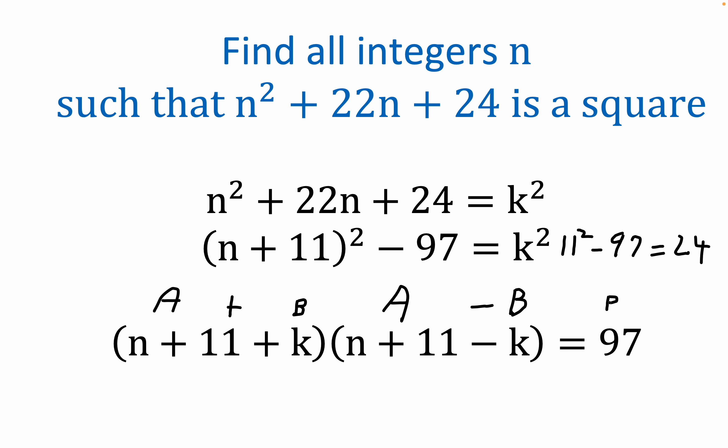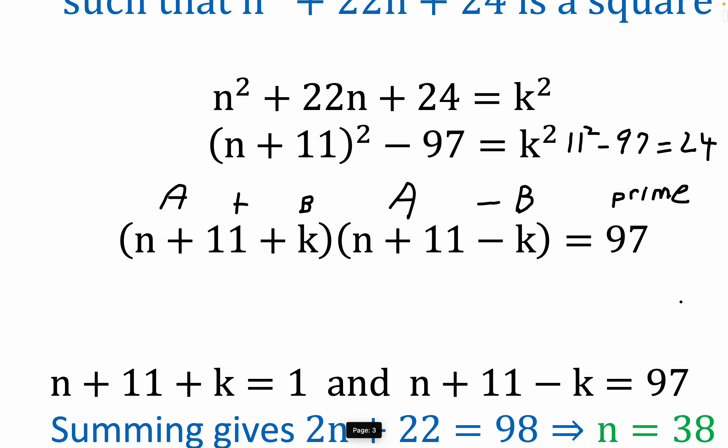Now the reason why this is useful is notice that 97 is prime. That means it only has two divisors: one and 97, and plus and minus one, minus one and minus 97. But it is a prime number, which minimizes the actual number of computations that need to be done.